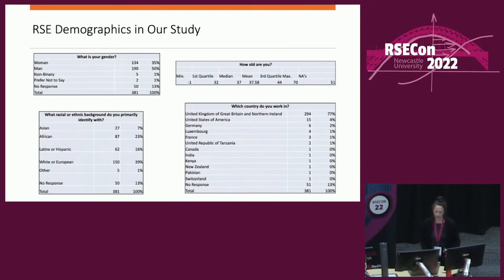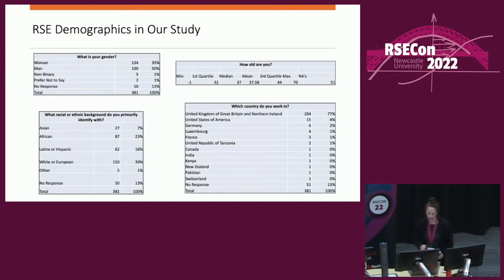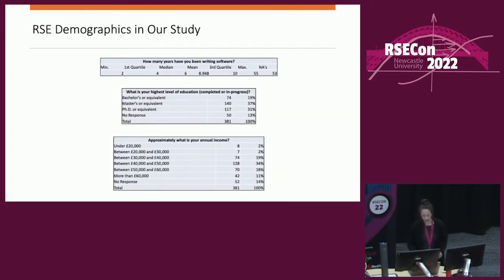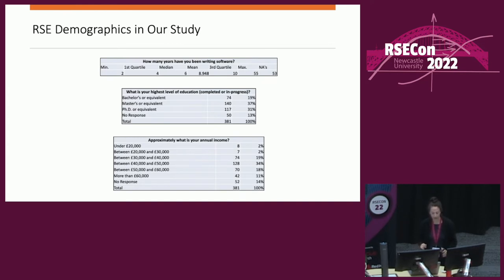To go over the demographics quickly: we had about 50% of respondents who were men, the mean age was around 38 years old, and we had respondents with a variety of racial or ethnic backgrounds as well as from different countries, but a majority at 39% of white or European respondents, and 77% of respondents from the UK. The mean number of years that our respondents had been engaging in RSE work or writing software was about nine years. The majority had a master's at 37% or a PhD at 31%, and the highest proportion of RSEs, 34%, were earning between 40 and 50,000 pounds a year.